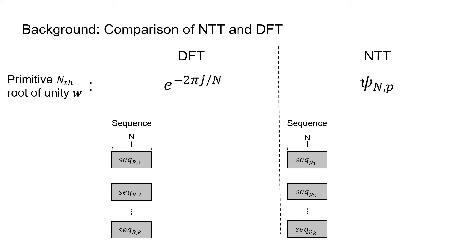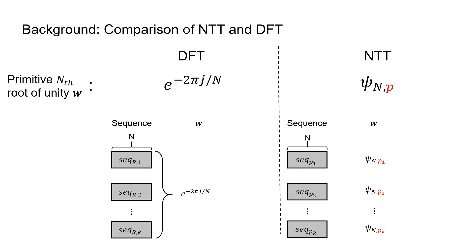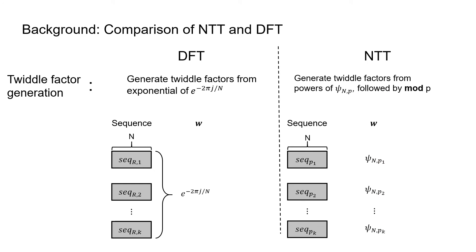Second, there is a difference in selection of the primitive n-th root of unity. DFT uses e to the minus 2πj over n as the primitive n-th root of unity. On the other hand, NTT uses ψ which satisfies ψ^n ≡ 1 mod p, where p is a prime satisfying p = k·n + 1 for a given n. ψ satisfying this condition for a given prime and n is written as ψ_{n,p} in the paper. If the root of unity of DFT is set by the length of the sequence, it can be shared among multiple conversions of different sequences. However, the root of unity of NTT is set by n and moduli p, so sequences converted using different moduli need different roots of unity. This difference in the primitive n-th root of unity also makes twiddle factors differ.